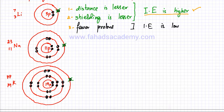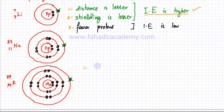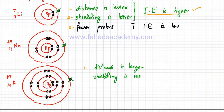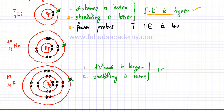Similarly, if you look at potassium as you move down the group, the distance of the outer electron is larger — it's further away from the nucleus, which means there's lesser attraction. The second factor is that there's more shielding. So these two factors suggest that the overall ionization energy for potassium is going to be lower; it's going to be easier to remove this electron.